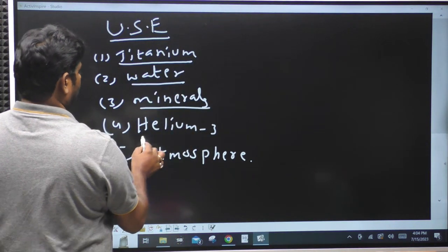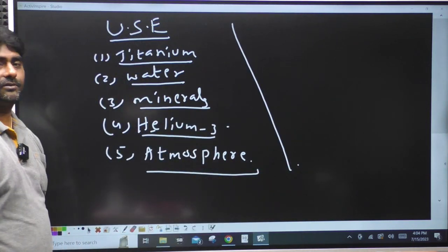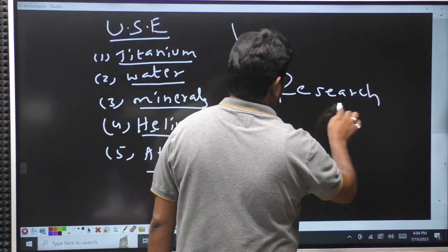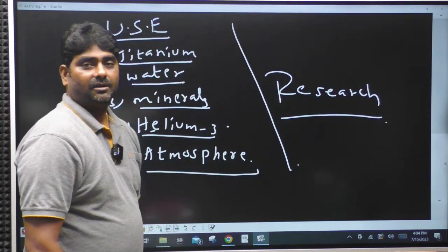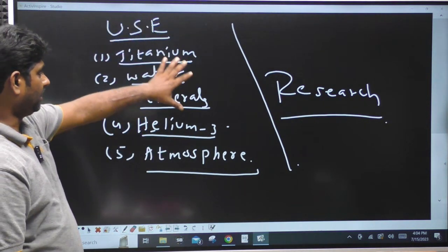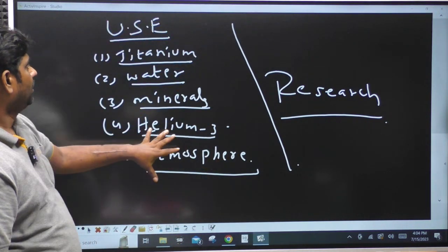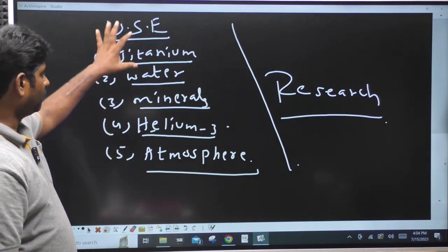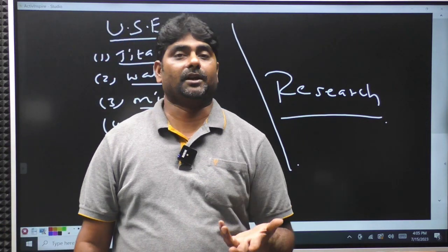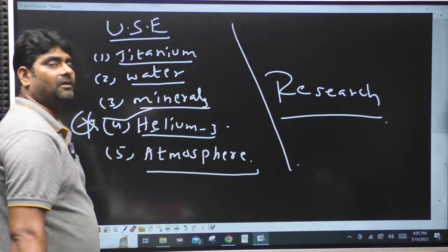The uses of the Moon mission include discovering titanium, water sources, minerals, and Helium-3. Helium-3 is very powerful for atomic energy purposes. Research into atmosphere conditions is also a major purpose. Helium-3 has enormous energy potential.